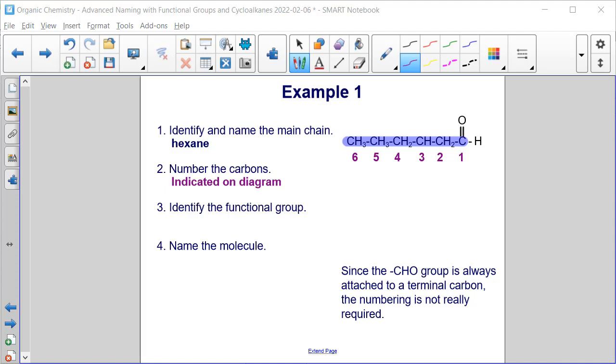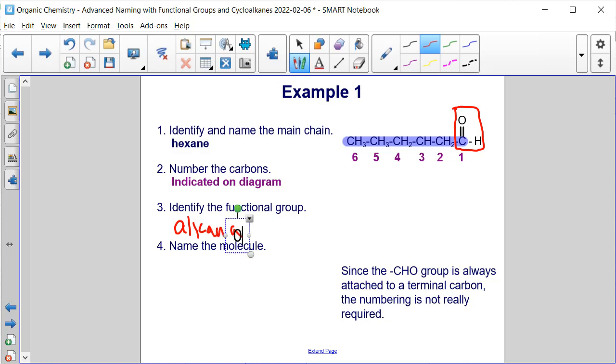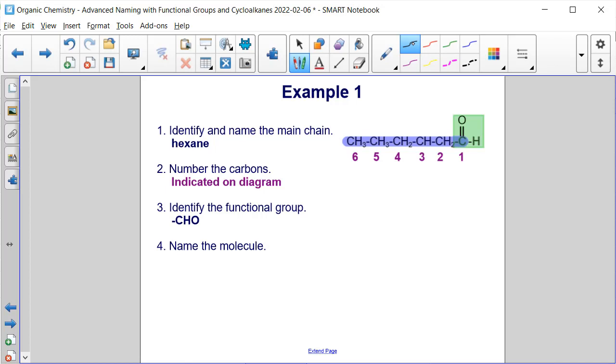Now we identify the functional group. And so because we have this double bond O, C double bond O, single bond H, that's an alkanal group on carbon number one. An alkanal group on carbon one. You can see highlighted in green that CHO group or that alkanal group.